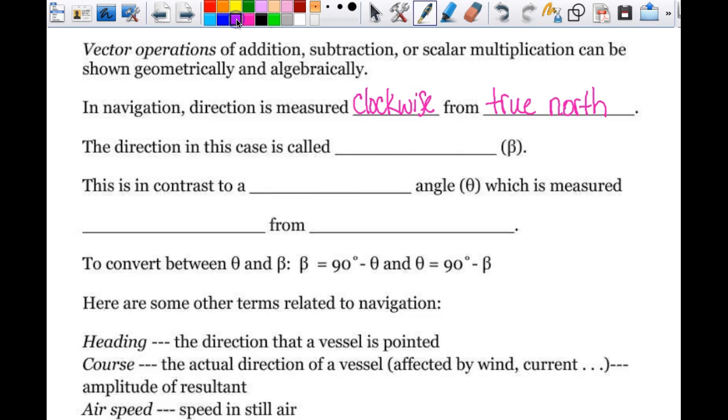So what that means is, if you think about this as being north, east, south, and west, that you would have an angle right here, and that angle would be measured this direction, and that would be like a positive 20 degrees.